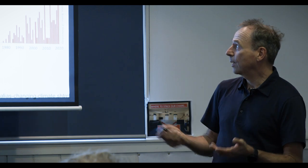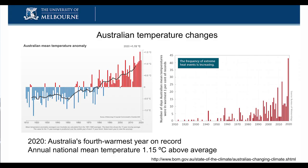The first few slides look into things you're probably all very familiar with. This one here is the Australian temperature range — the mean annual temperature changes from 1910 to 2020. We're having a temperature increase of 1.5 degrees Celsius over the mean average for the last 110 years.